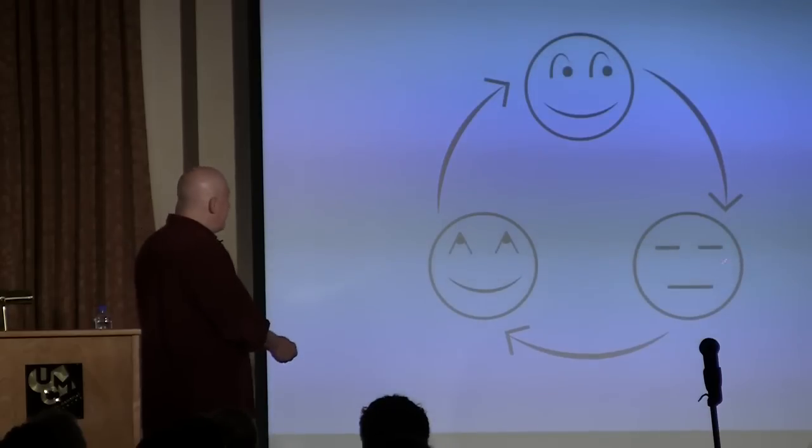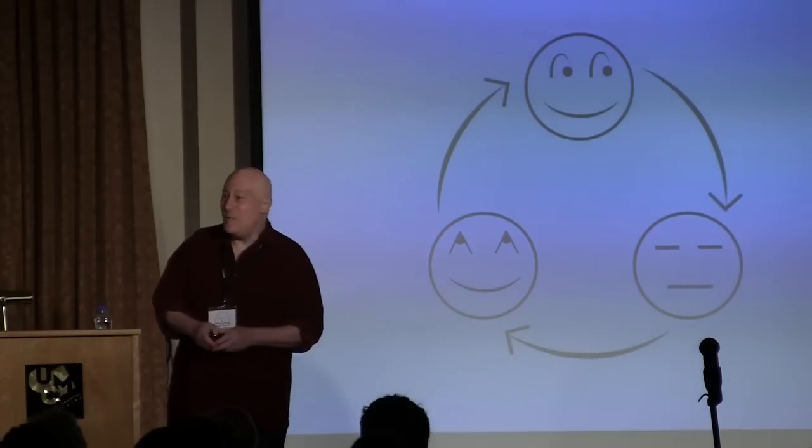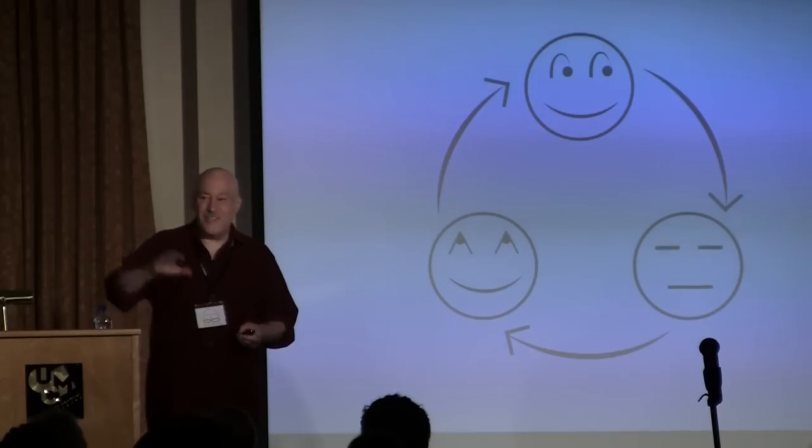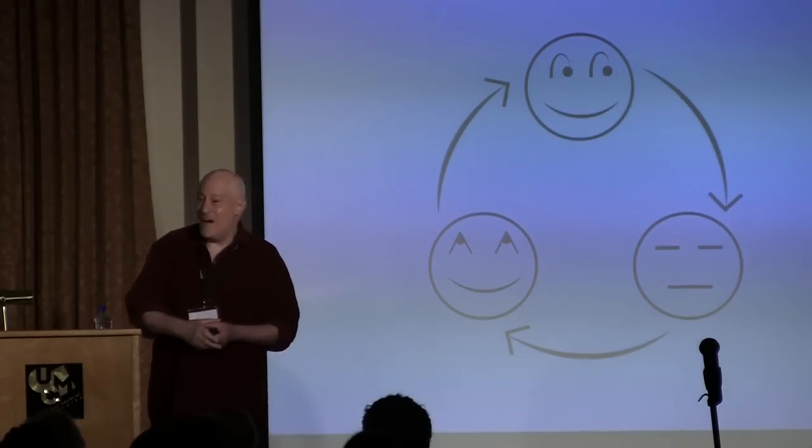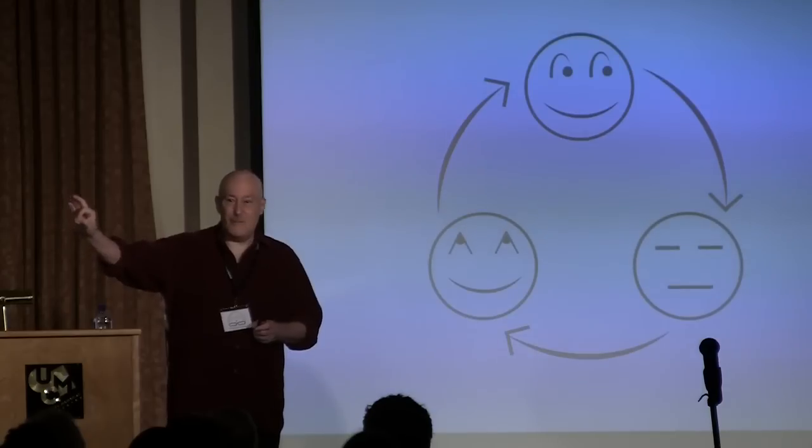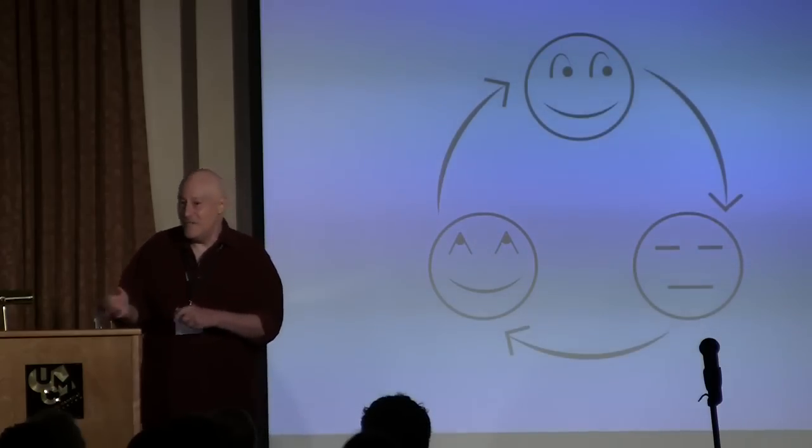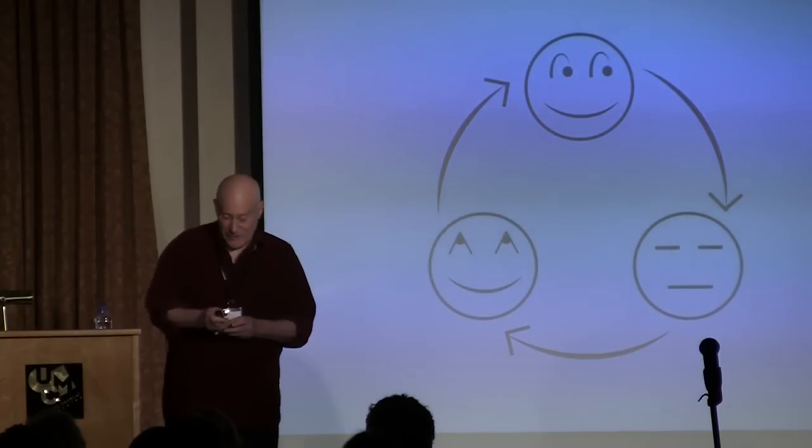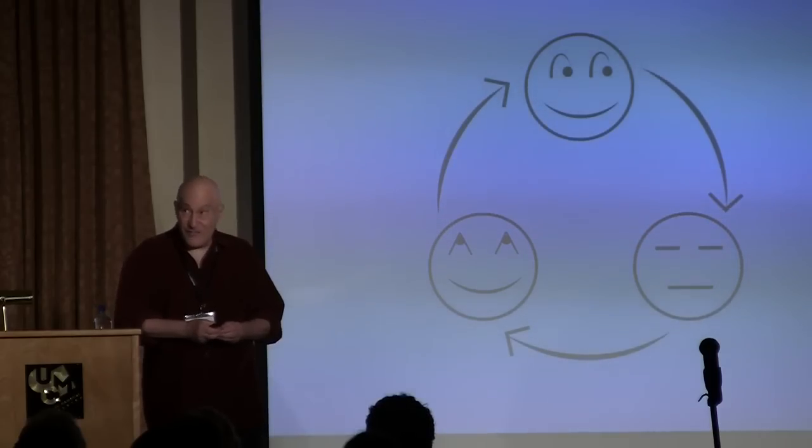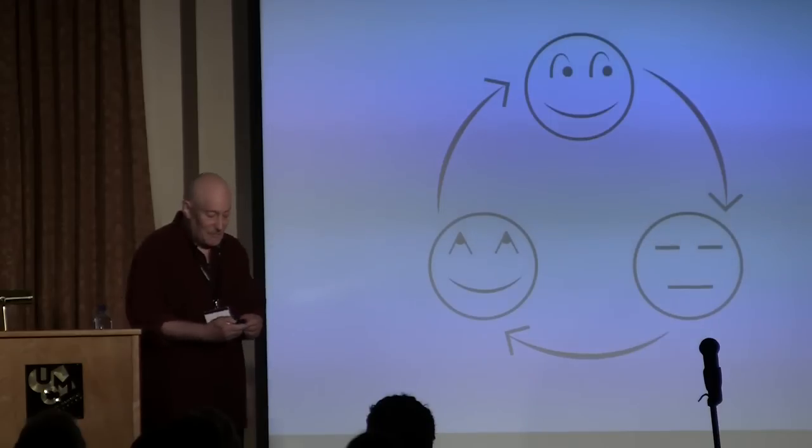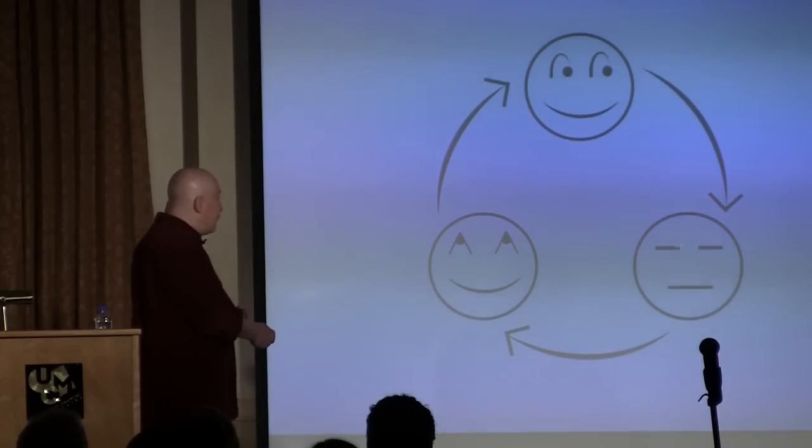Now, we might refer to this as an Archimedean point. So, Archimedes said, if you give me a place to place a fulcrum, I'll be able to move the world. That's an Archimedean point. The problem is that the place has to be outside of the world, which is contradictory.